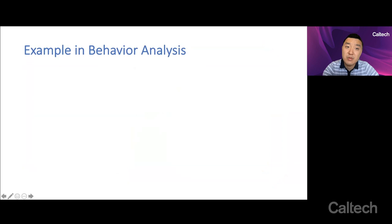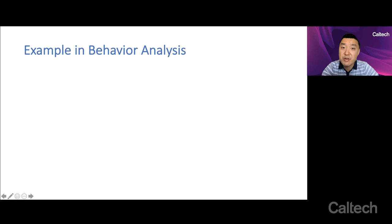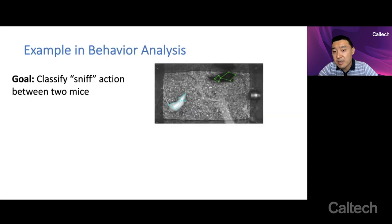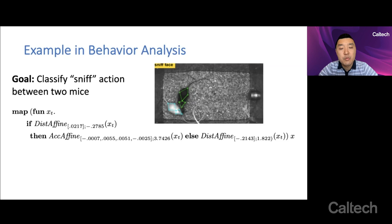Just to give you an example in behavior analysis, which is where I've done most of my collaborations in this space. Here you see a video of two mice interacting with each other. In this case, you have both the video and the tracked skeletal poses. And the goal is to classify when these two mice in these frames are sniffing. Given data of this form and some annotations, we can give this to a neural symbolic programming approach.